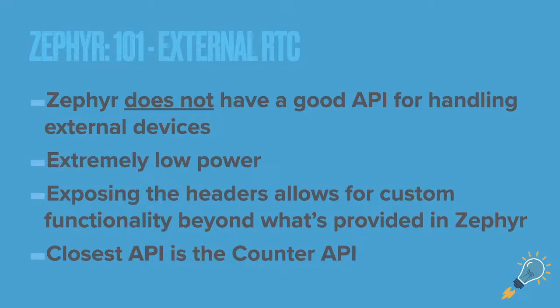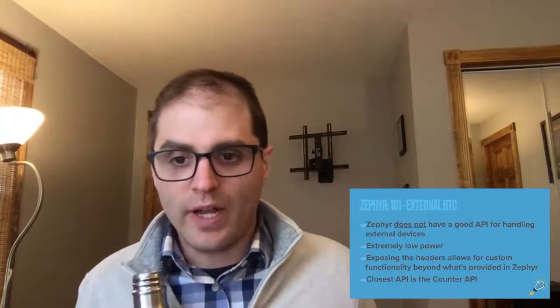One thing that Zephyr does not have — and I've seen people on the repo talking about needing better support — is a good external RTC API. There is the counter API, which you can use for RTCs since RTCs usually have some type of timer capability, but for actual timekeeping, Zephyr does not have a good API. External RTCs can be really low power — less than one microamp — which is awesome. You can expose the headers from your driver and use them within your application code.